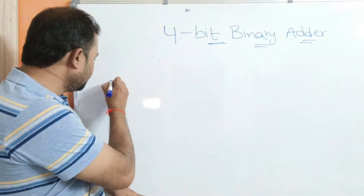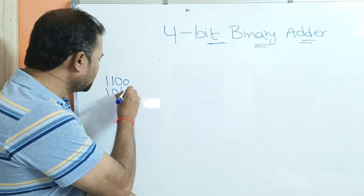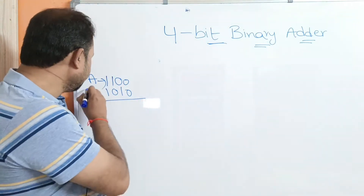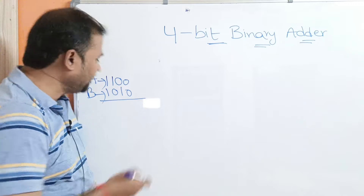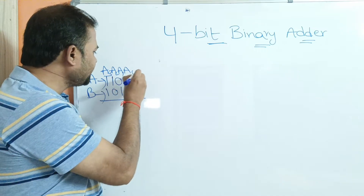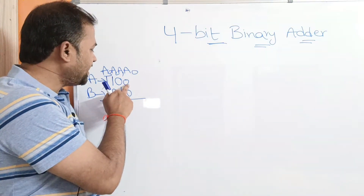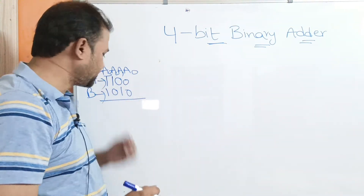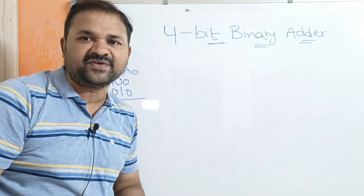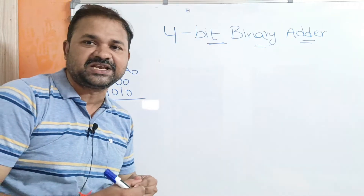Let us take an example. Let the first binary number A be 1100, and the second binary number B be 1010. The bits of A are A3, A2, A1, A0, where A3 is the most significant bit and A0 is the least significant bit. Likewise, B contains 4 bits: B3, B2, B1, B0, where B3 is the most significant bit and B0 is the least significant bit.